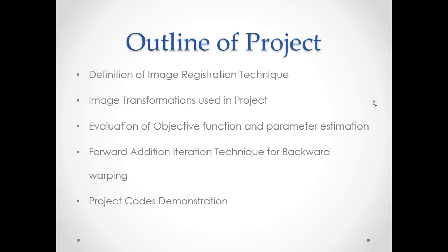This is the outline of the project. First we define what image registration technique is. Second, we have a problem statement which starts from an image being transformed into some other type of image, and then we have to get back the original image using image registration and bilinear transformation. Then we cover two important terms: the objective function and parameter estimation.